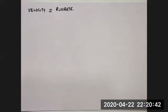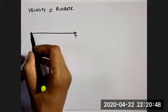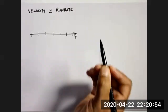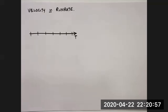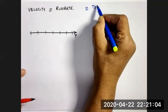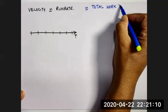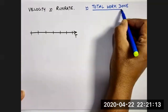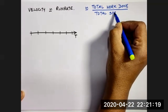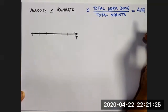Let's assume this is a time axis and if you consider these intervals as sprints, then velocity is nothing but total work done divided by total number of sprints, which gives you the average work done by the team.